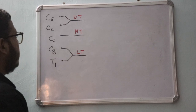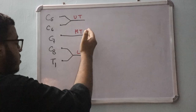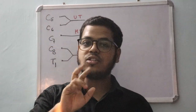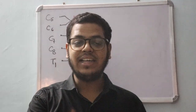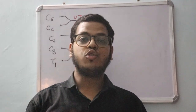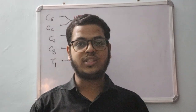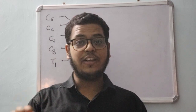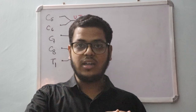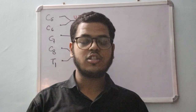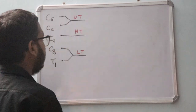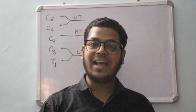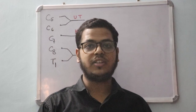Each of the three trunks will divide into two divisions — one anterior and one posterior — giving six divisions in total. I'll denote the anterior divisions with black ink and the posterior divisions with red ink.